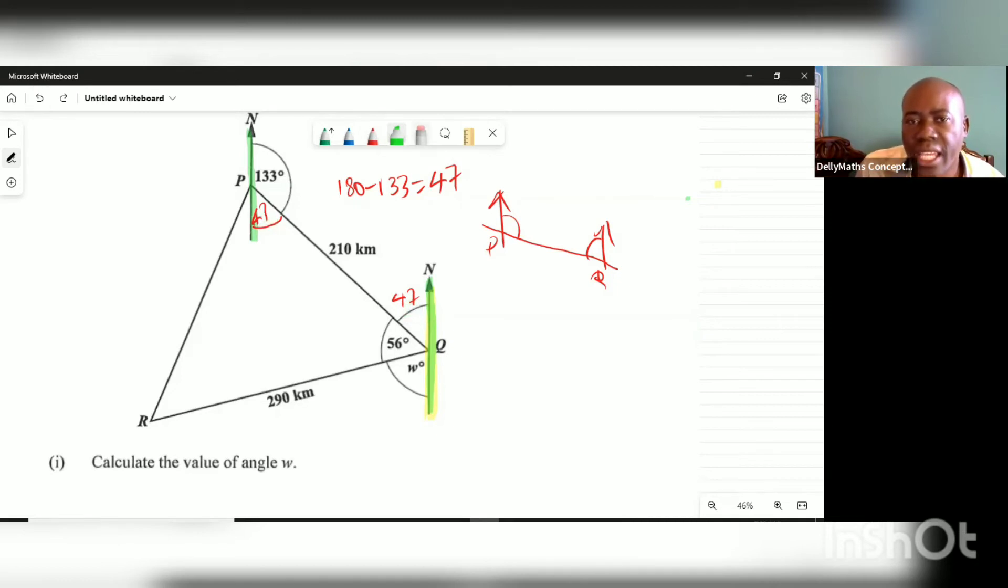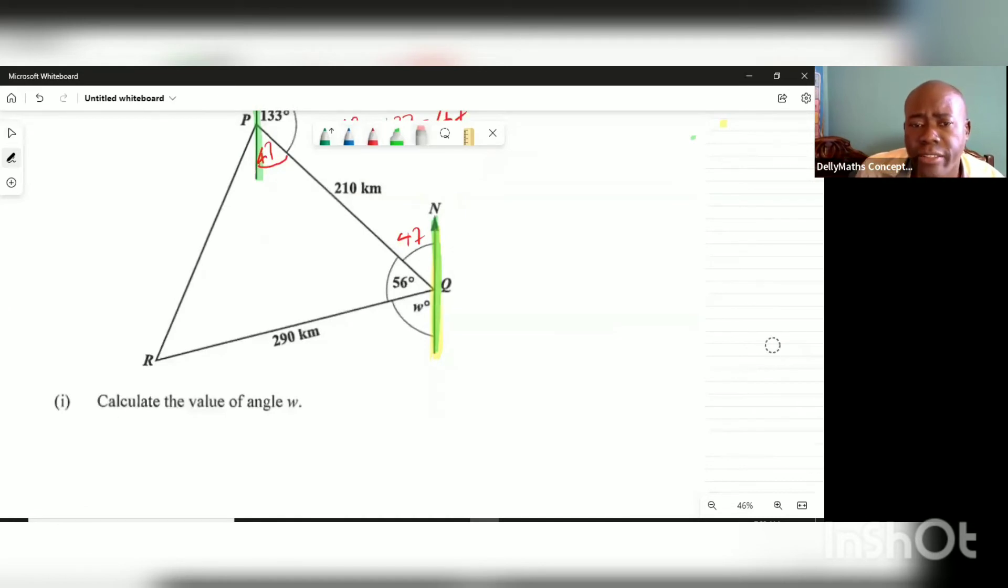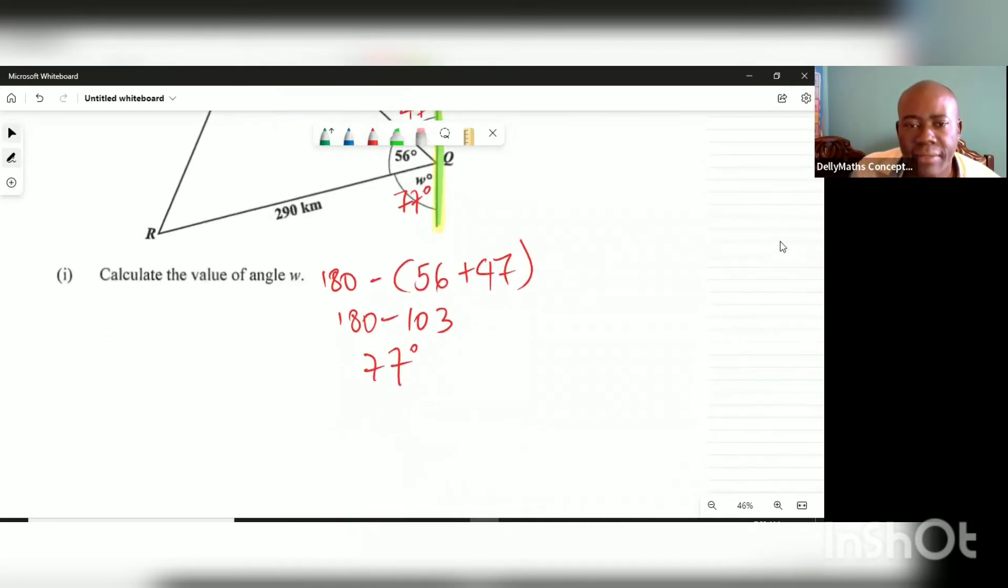Having known that we have that part to be 47, W is going to be 180 degrees minus the sum of 56 plus 47. So 56 plus 47, that's about 103. So 180 minus 103, and we're looking at 77 degrees. Angle W is 77 degrees right there. That's the value of angle W, 77 degrees.